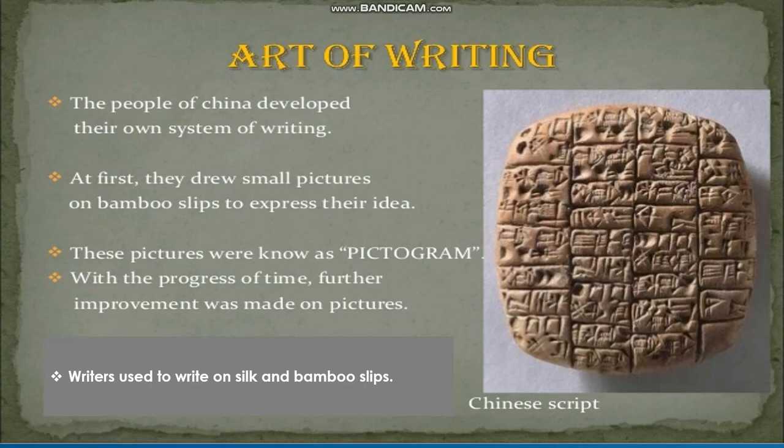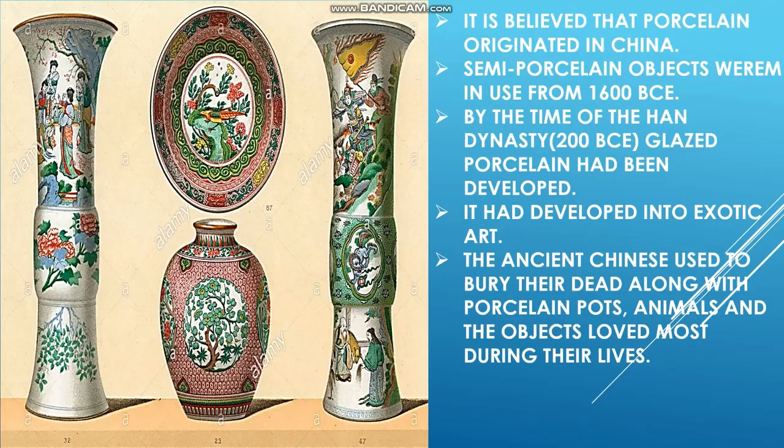The people of China developed their own system of writing. At first, they drew small pictures on bamboo slips to express their ideas; these pictures were known as pictograms. With the progress of time, further improvements were made, and writers began to write on silk and bamboo slips.